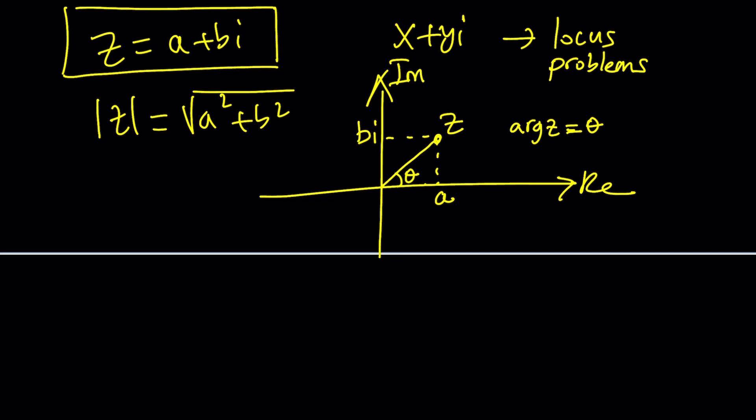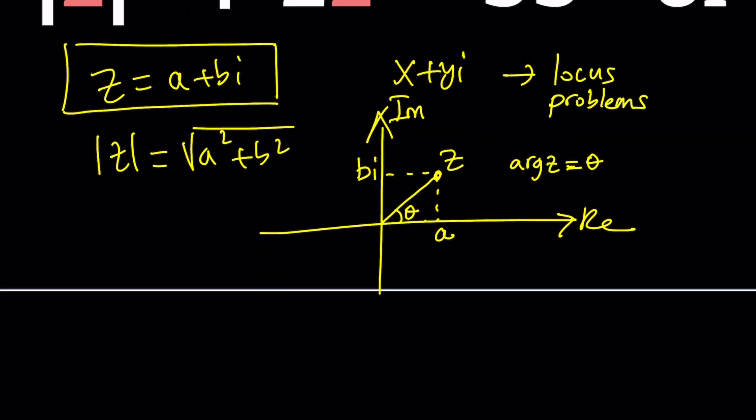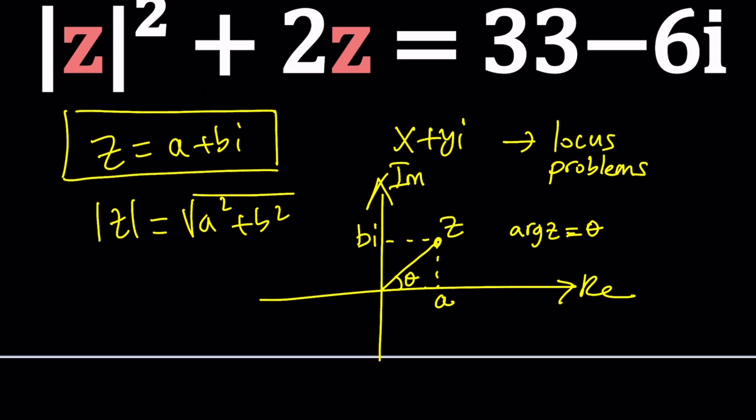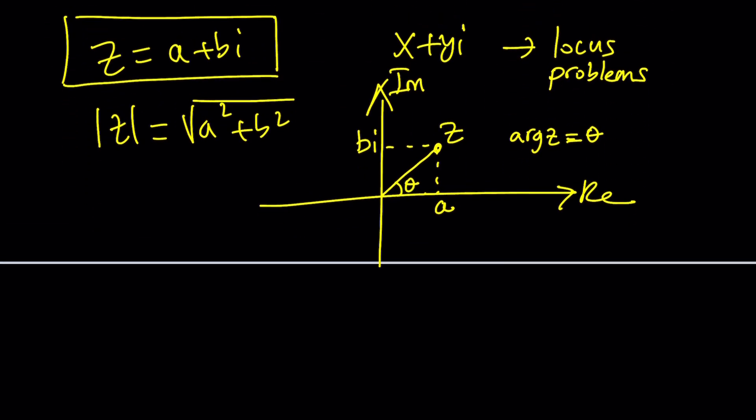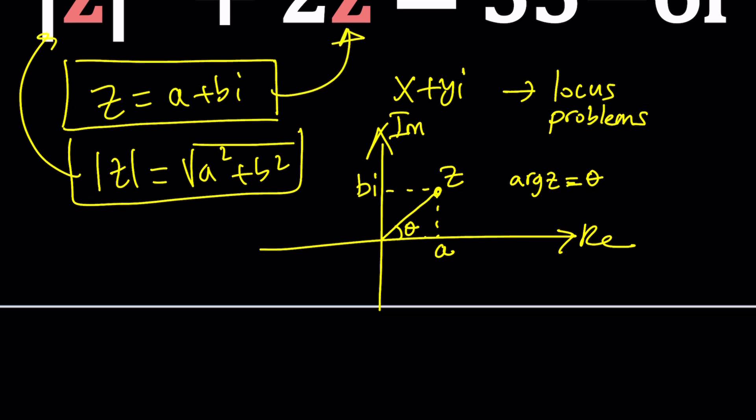We could give it a try and see if that works. So let's go ahead and start with a plus bi. Since z is equal to that, we can replace z with that and absolute value of z with this. Let's see what that gives us.